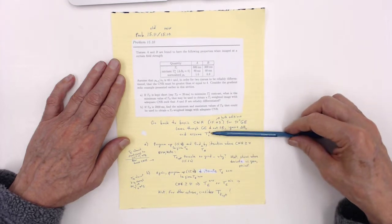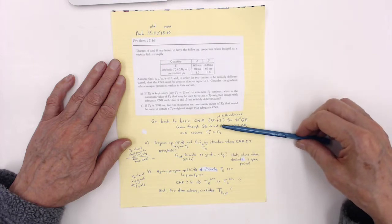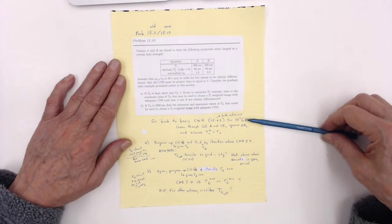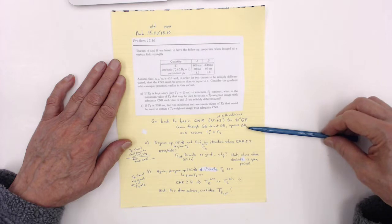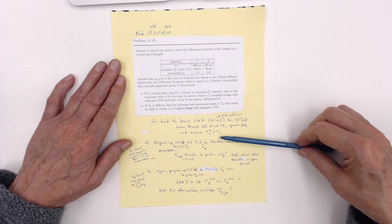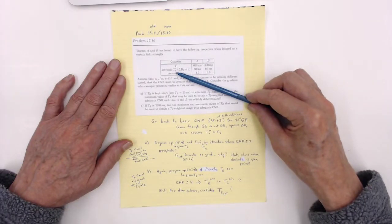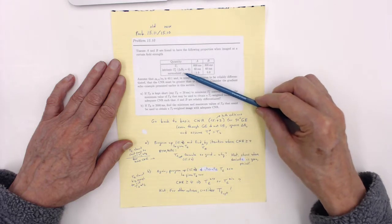We're going back to basic CNR contrast to noise ratio, equation 15.43 in both editions. It's a 90 degree gradient echo but we're ignoring the non-uniformities, the external non-uniformities in the magnetic field that give rise to T2 star effects, T2 star being different from T2 and we're going to ignore that. So T2 star is just T2. So when we say intrinsic T2 star here, delta B0 equals zero, you can just think of that as T2.